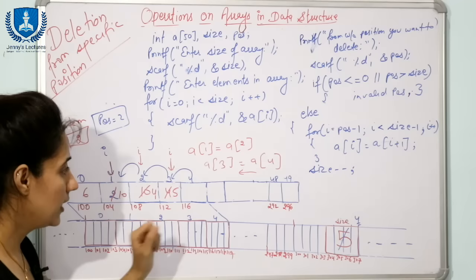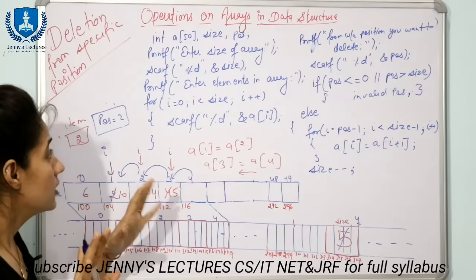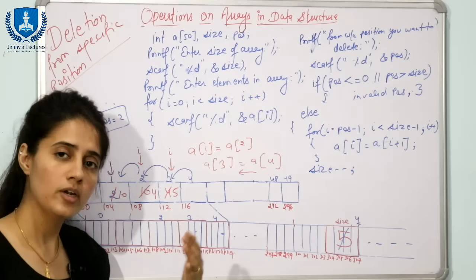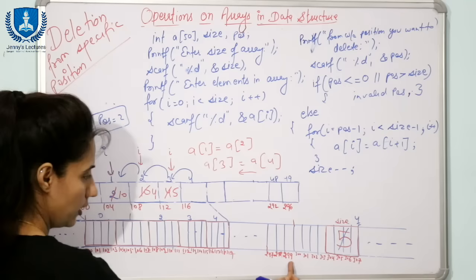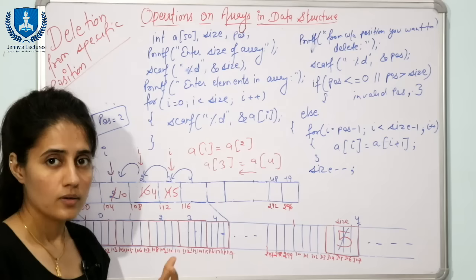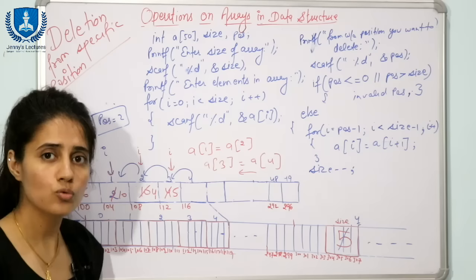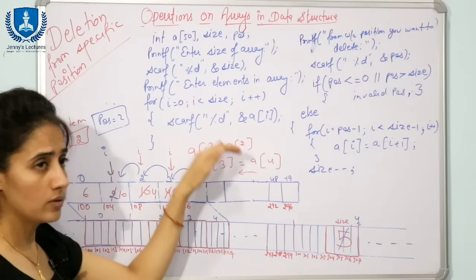One more thing: in C, there is no concept of bound checking for arrays. If you declare an array of size 50 but the user enters size 60 and starts entering 60 elements, the compiler allows it — but that is incorrect because only 200 bytes were allocated for 50 elements. So the programmer must write code to check the boundaries. After entering the size, write an if statement: if size is greater than the maximum size (50), print 'out of bound'. In the else block, proceed to enter elements.